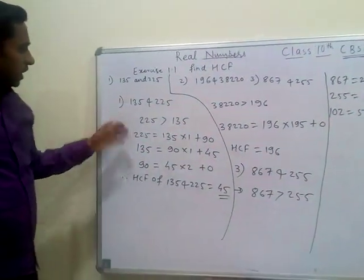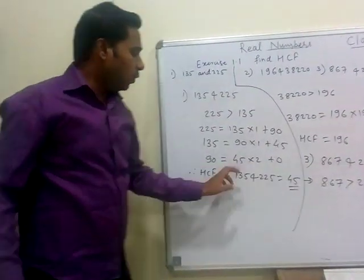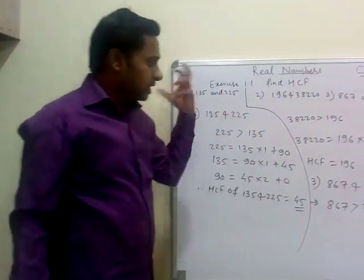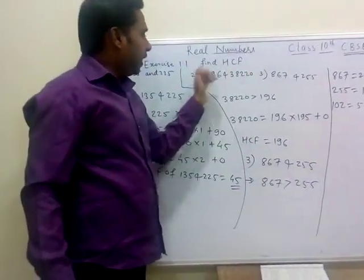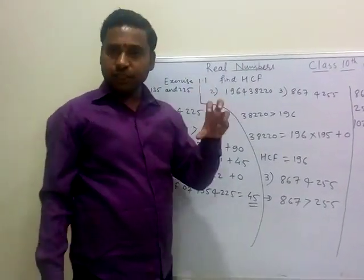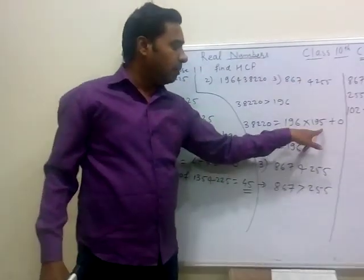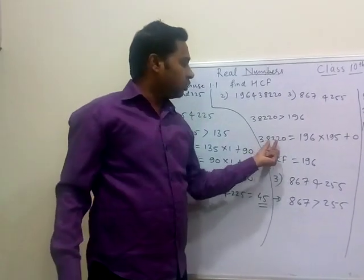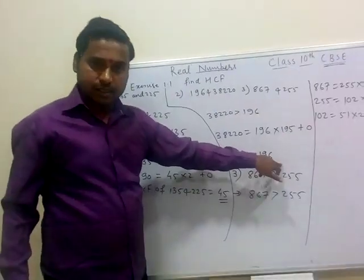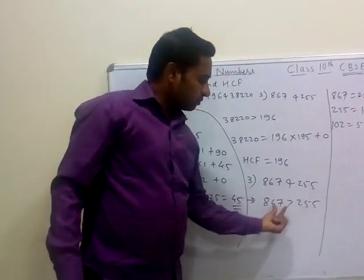Let us recap. In the first case, for 135 and 225, our HCF was 45 because dividing by 45 gave remainder 0. In the second case, for 38,220 and 196, division in the first step itself gave remainder 0 with 196 × 195 = 38,220, so HCF = 196. In the third case, for 867 and 255, we got remainder 102, then 51, and then 0, so HCF = 51.